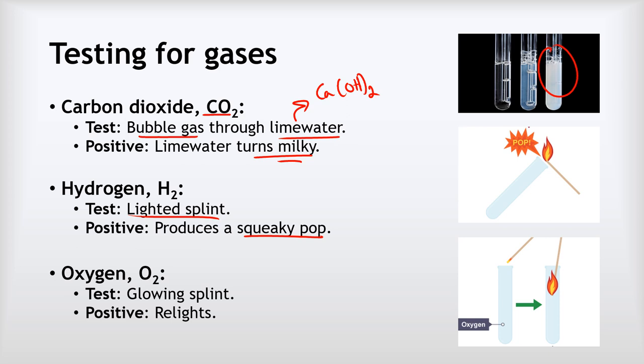Our last test is for oxygen. Now for this one we get a glowing splint, so what we mean by that is we take a splint, we set it on fire and then we blow it out so it's got a red hot glowing end. And we'll stick that into the test tube and if the splint relights that means that the gas was oxygen.